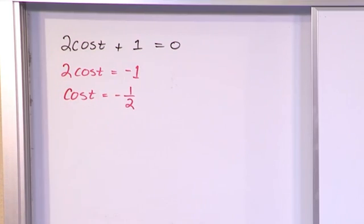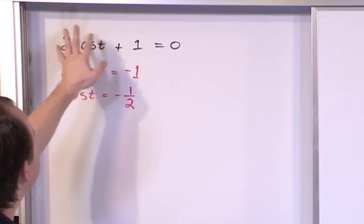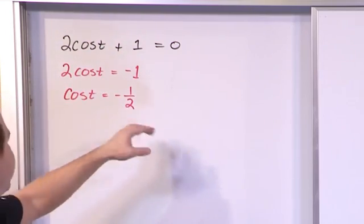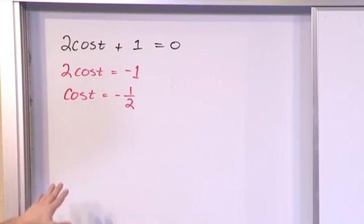So far, it's behaving very much like a regular old algebraic equation. So if you're trying to solve for t, manipulate, get everything over to the other side, now you're confronted with this cosine.